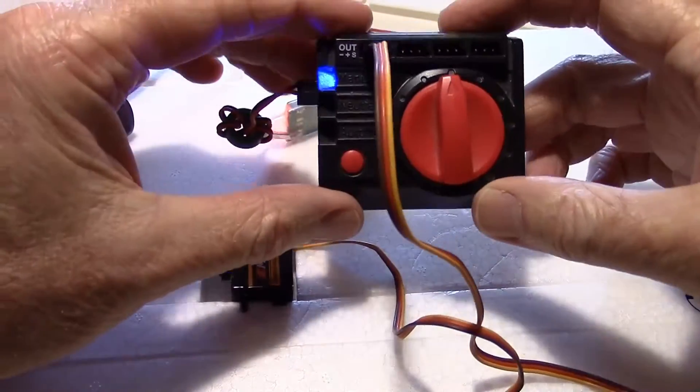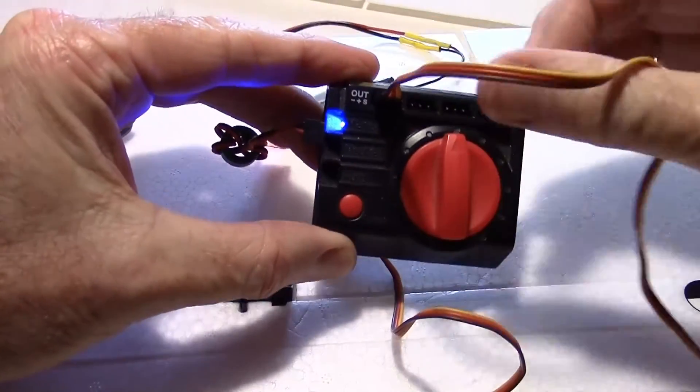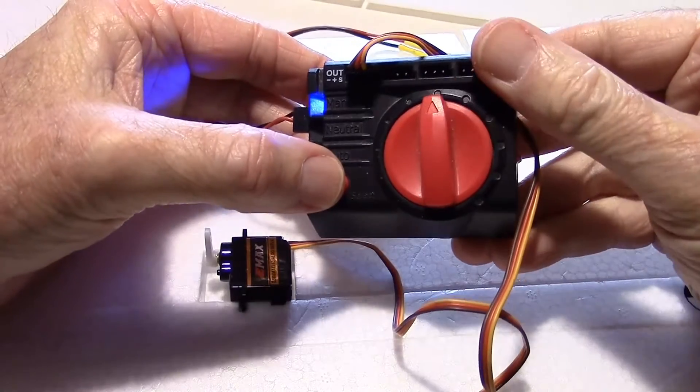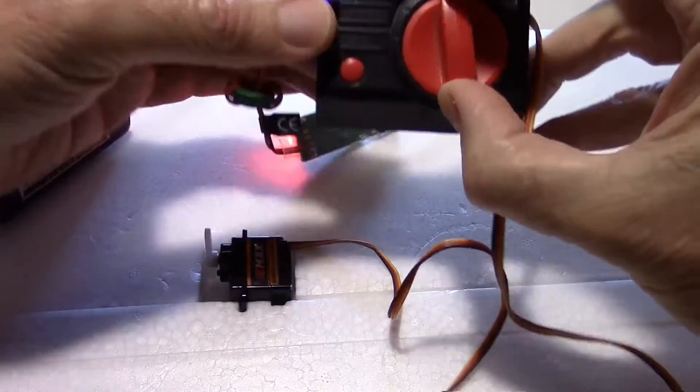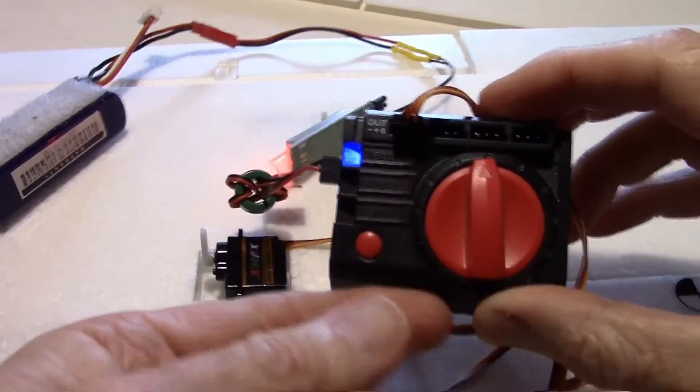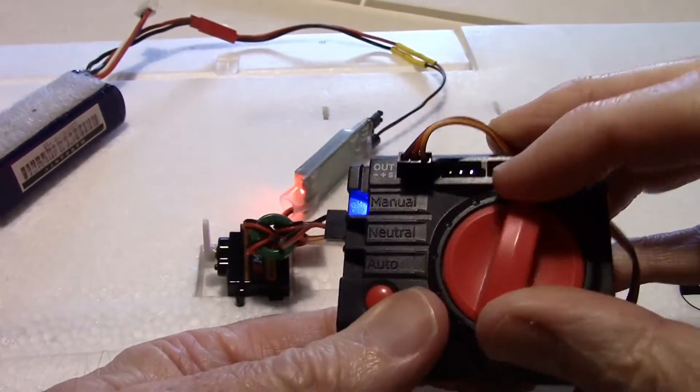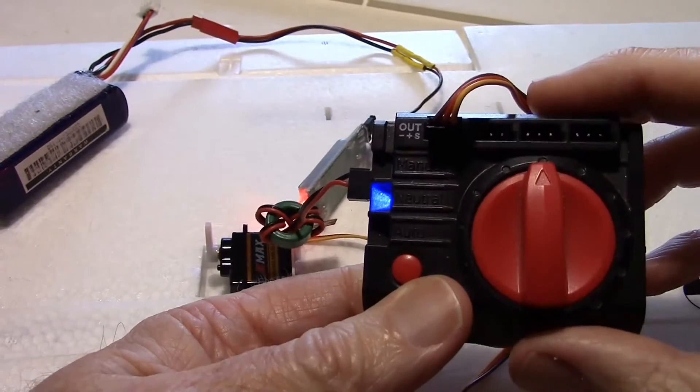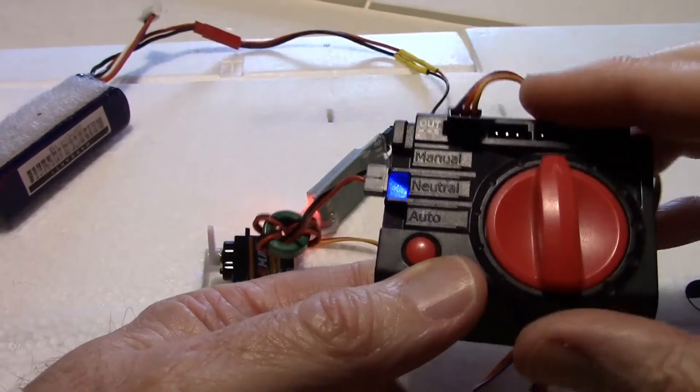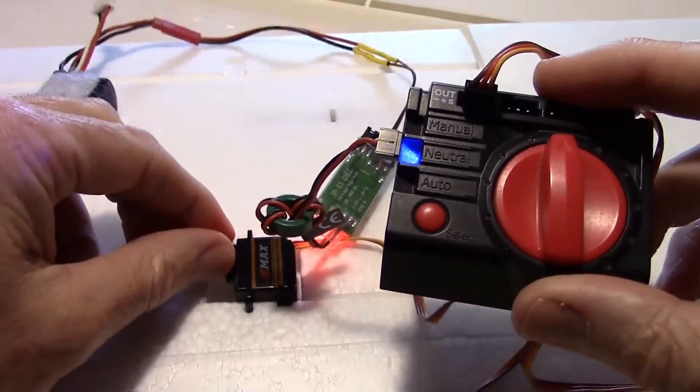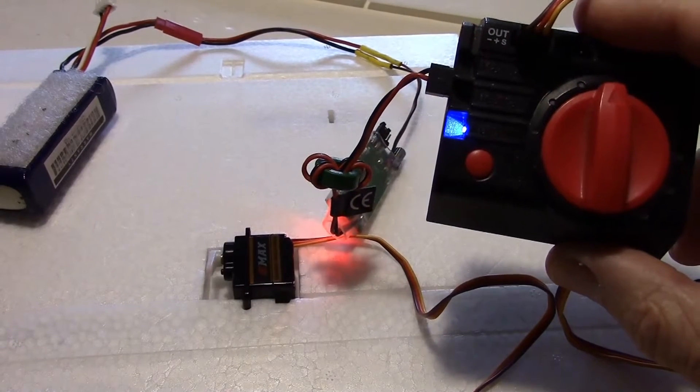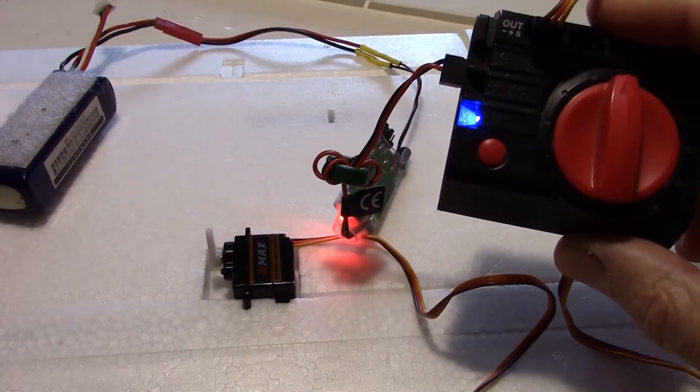Now this servo tester has three positions. It's on manual right now and I can move it around like that. I can press the button and that is neutral position right there, which is supposed to be center. And if I just want to test it, it'll run it back and forth like that and I can see the full travel.